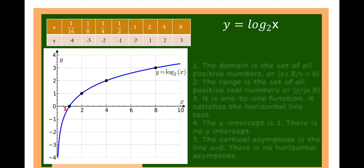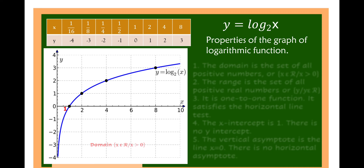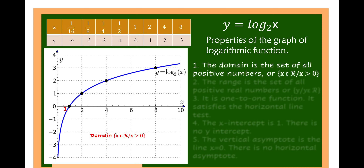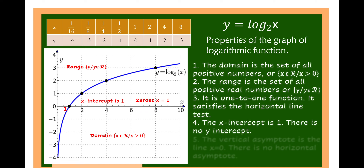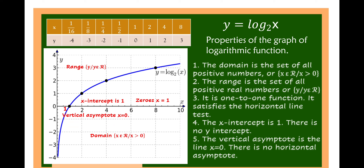Let us review the graph of y is equal to log of x to the base of 2. We have here the table of values in the graph. The properties of the graph of a logarithmic function: the domain is the set of all positive numbers, or x is an element of real numbers where x is greater than 0. The range is the set of all real numbers. It is a one-to-one function because it satisfies the horizontal line test. The x-intercept is 1, or the zeros is x is equal to 1. There is no y-intercept. The vertical asymptote is the line x is equal to 0, and there is no horizontal asymptote.